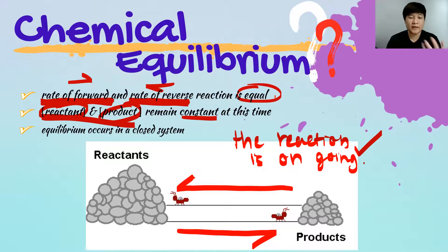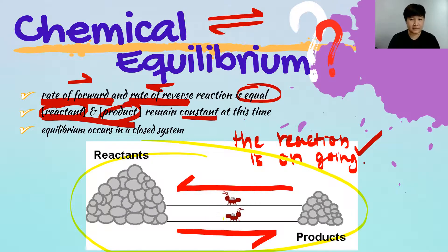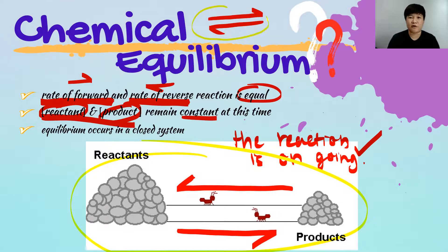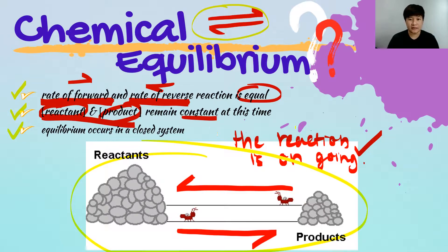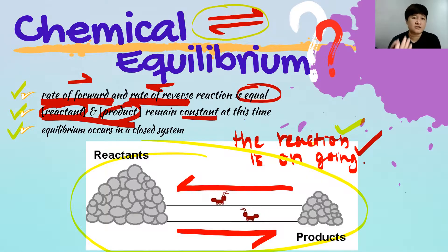That is the basic concept of chemical equilibrium. Bear in mind that you can only achieve chemical equilibrium in a reversible reaction. If it is an irreversible reaction, there will be no chemical equilibrium because all the reactant will become product. For chemical equilibrium, you must have both a forward and a reverse reaction. And remember: when you achieve chemical equilibrium, the reaction doesn't stop — the concentration of product and reactant simply remains unchanged.